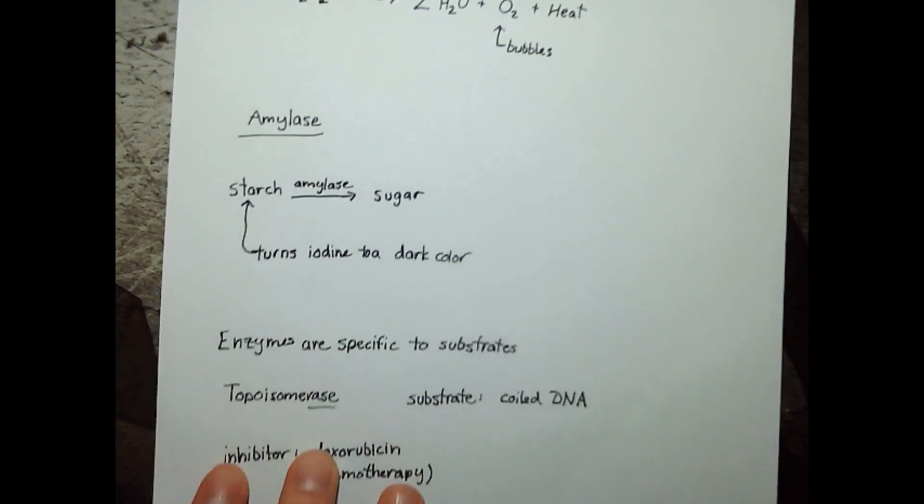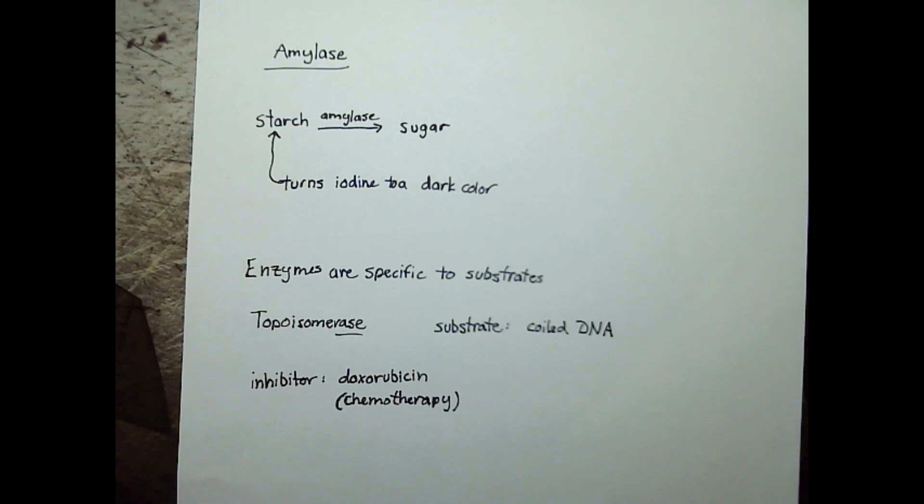The next enzyme we'll be looking at is amylase. Amylase turns starch into sugar. Starches are long carbohydrate polymers made up of many individual sugar units. Amylase breaks down the long chain into simple sugars or into the monomer parts.